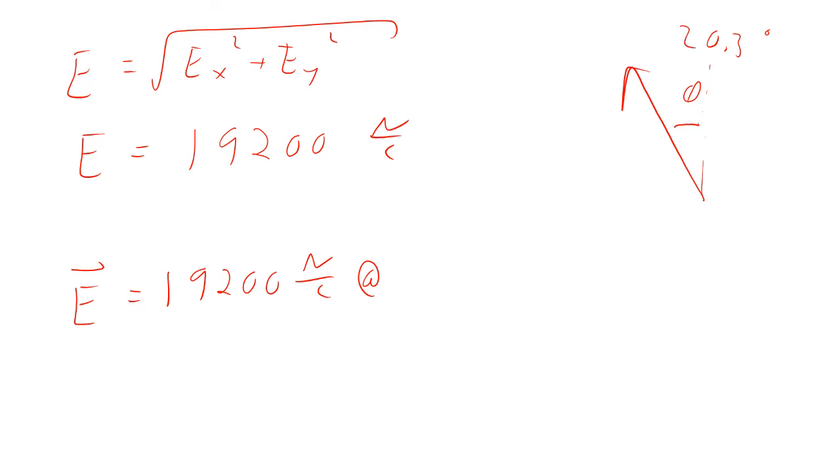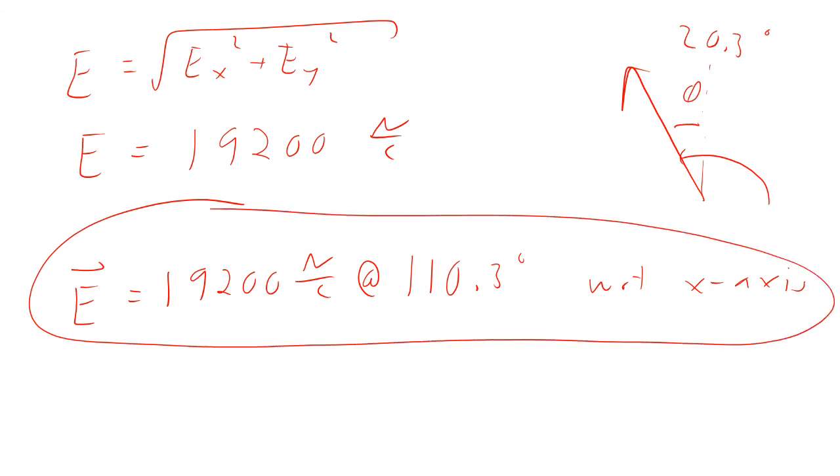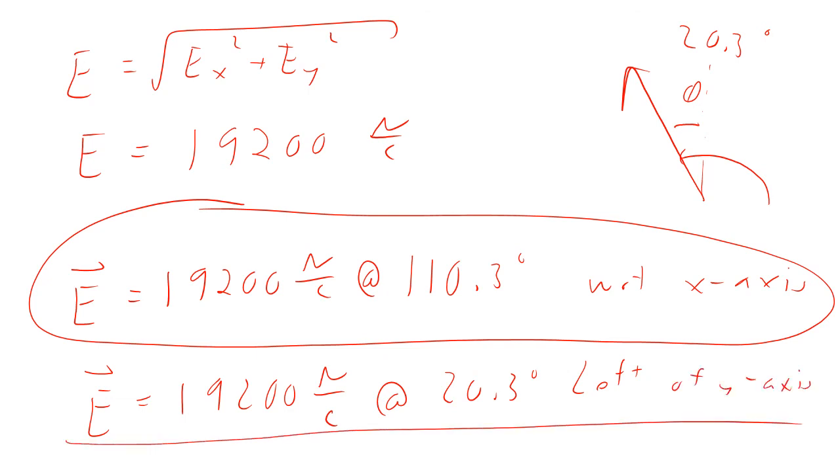And so that means that we can now say that relative to the X axis, then this is an angle of 110.3 degrees with respect to the X axis. I always like to say what you're measuring relative to because you could have said it's 19,200 newtons per coulomb at an angle that is 20.3 degrees left of the Y axis. And that really says exactly the same thing as what you had before. Both of these, these are two different ways of saying the same thing. If you put either one of those on the test, I'd say, yeah, that's right because you got the idea down and I can measure relative to whichever axis you measure relative to.